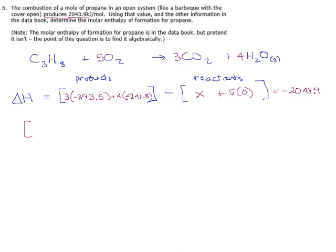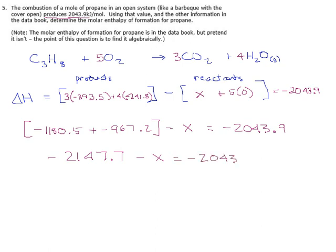Let's see what we get here. Three times minus 393.5 is minus 1180.5, plus four times 241.8, that's minus 967.2, minus all this here is X, equals minus 2043.9. Add these together, minus 1180 plus 967.2, so I get minus 2147.7 minus X equals minus 2043.9.